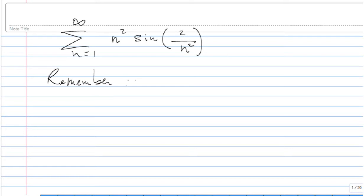of sine at 0, which is lim(sin x / x) as x→0 equals 1. So, using this limit, we can claim that lim(sin(2/n²) / (2/n²)) as n→∞ equals 1.